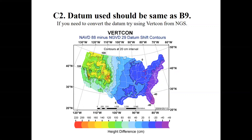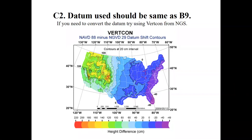Always keep that in mind. To correlate the two datums, there's a website called Vertcon — you can Google it. Go to the Vertcon website, type in a latitude and longitude, and it will give you the exact difference in elevations for that point as a way of converting the numbers.